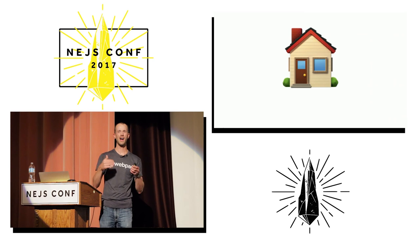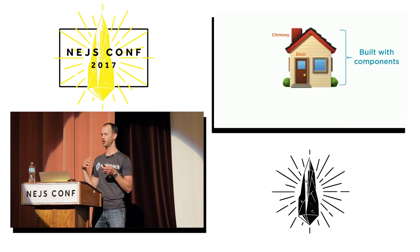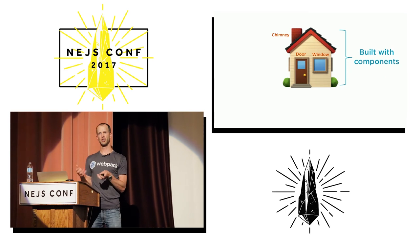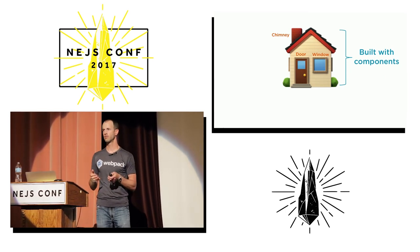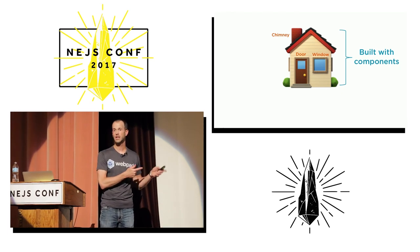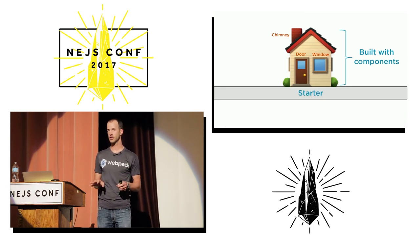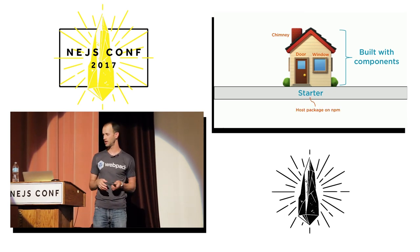I want to clarify why I laid out this talk in the order I did. When you build a house with components, you get a chimney, a door, a window — you don't start from scratch building your own window. This should be your development story too. But to do this, you need a foundation — a house can't float in the air. The foundation I'm suggesting is a starter kit, which encapsulates all the dependencies your team needs and gets hosted on NPM.